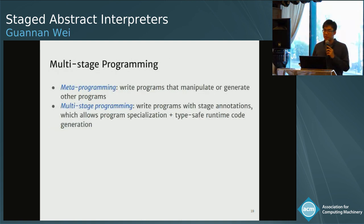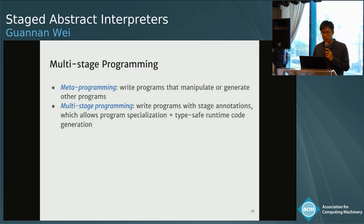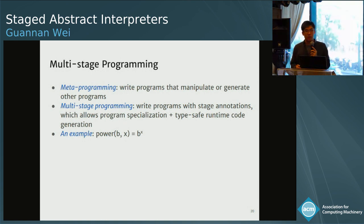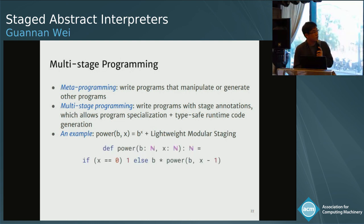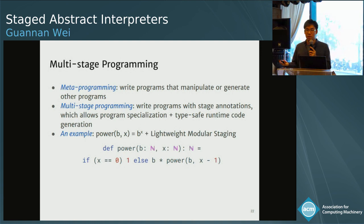Multi-stage programming is a way of doing meta-programming — we can write programs to generate or manipulate other programs. It provides a way for programmers to annotate and control which part of the program should be specialized, and also enables runtime code generation in a type-safe manner. A classic example is this power function that takes two numbers b and x and computes b to the power of x. Here I use the Lightweight Modular Staging framework to show the idea. The function first checks whether x is zero — if so, it returns one; otherwise it returns b times a recursive call with a smaller x.